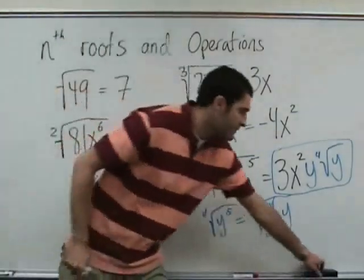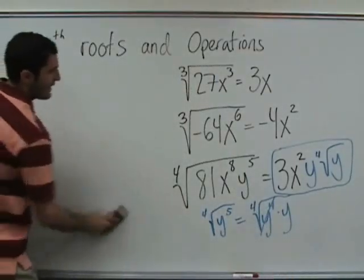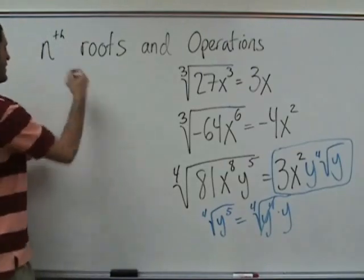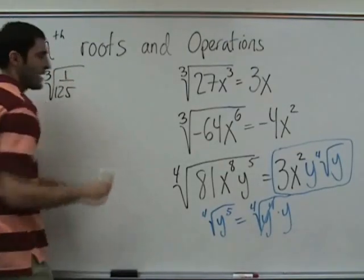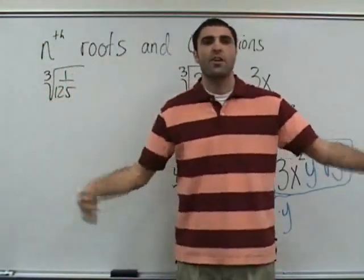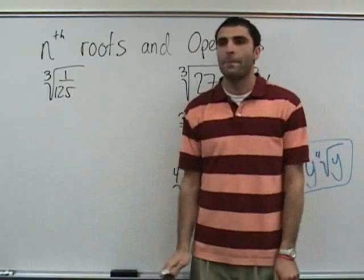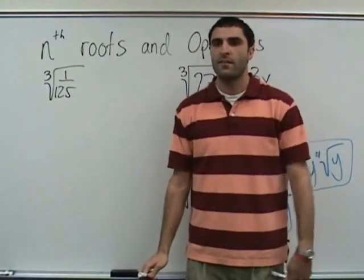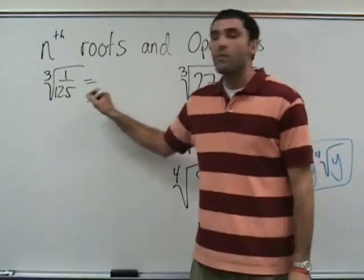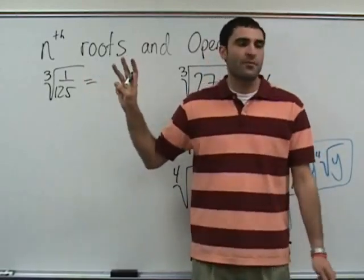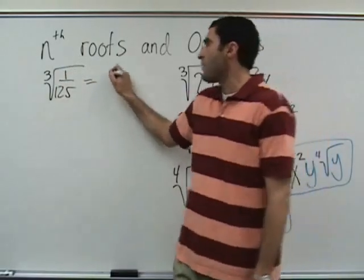You simplify what you can and you leave what you can't. There was one quick one — a little fraction exposure. What times what times what is 1 over 125 on the bottom? One-fifth times itself three times — so the answer is 1 over 5.